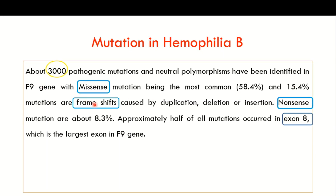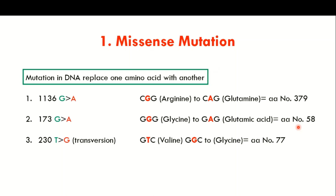Frameshift mutations can be caused by duplications, deletions, or insertions. About 8.3 percent of hemophilia B cases are due to nonsense mutations. So the most common mutation in the F9 gene causing hemophilia B is the missense mutation at 58.4 percent. Approximately half of all mutations actually occur in exon 8 of the F9 gene, because exon 8 is the largest exon — whether missense, nonsense, or frameshift, about half are found in exon 8.